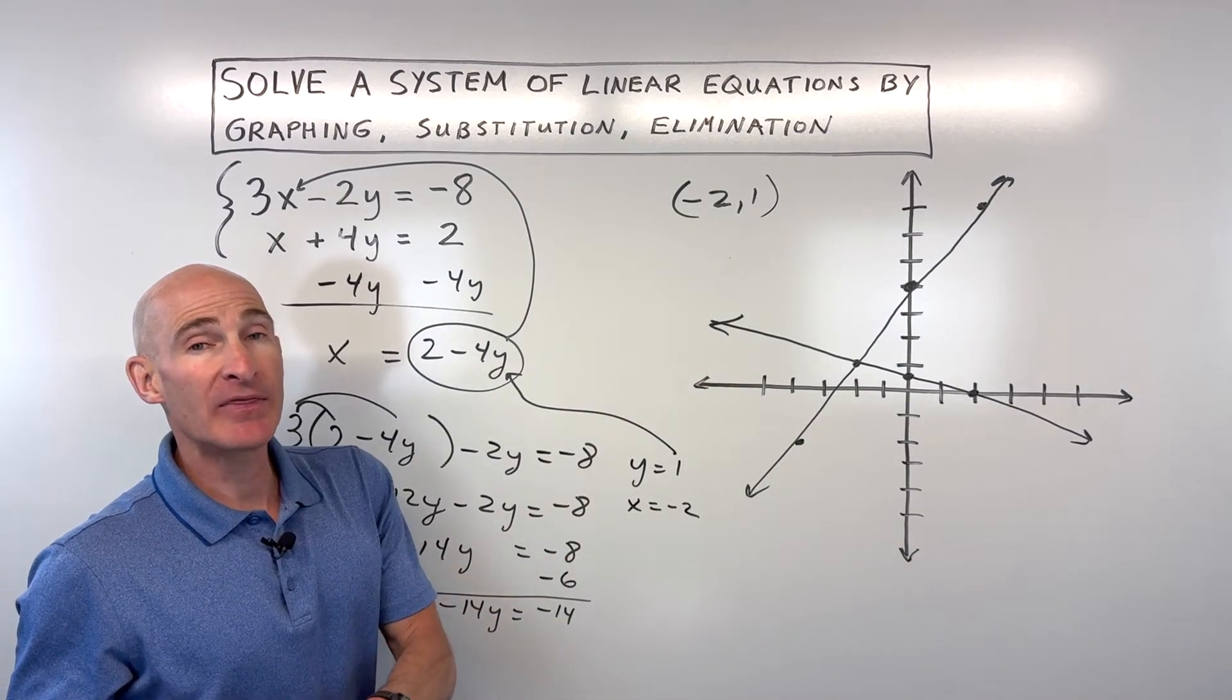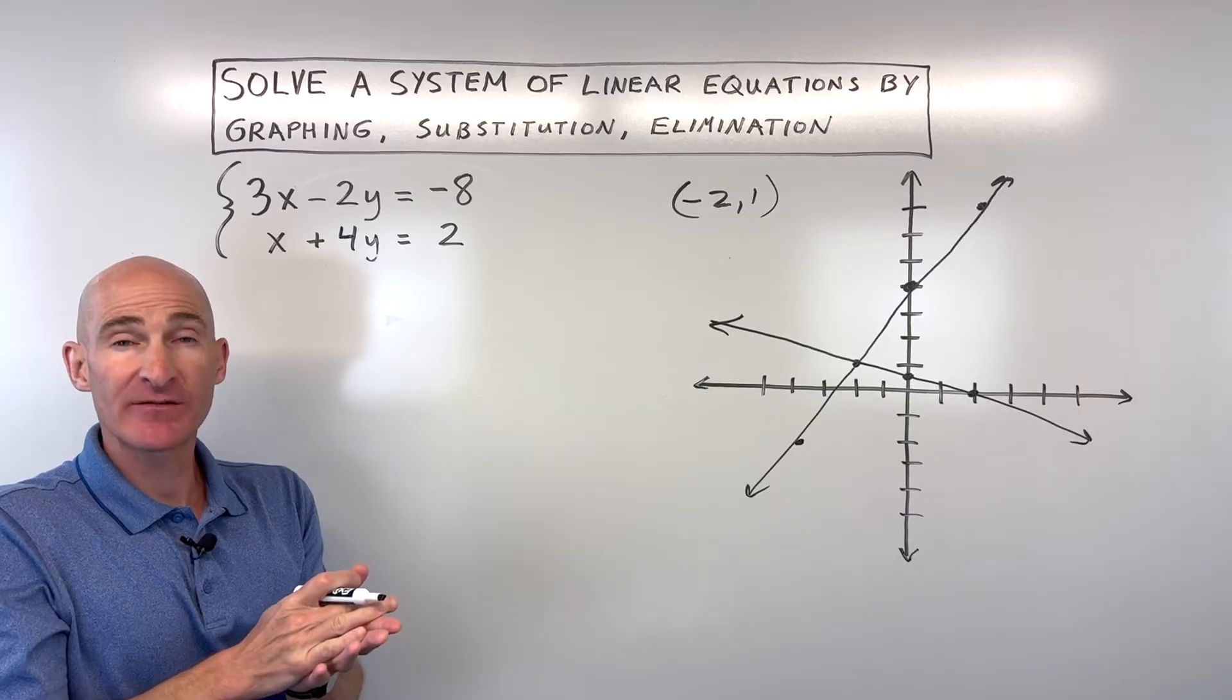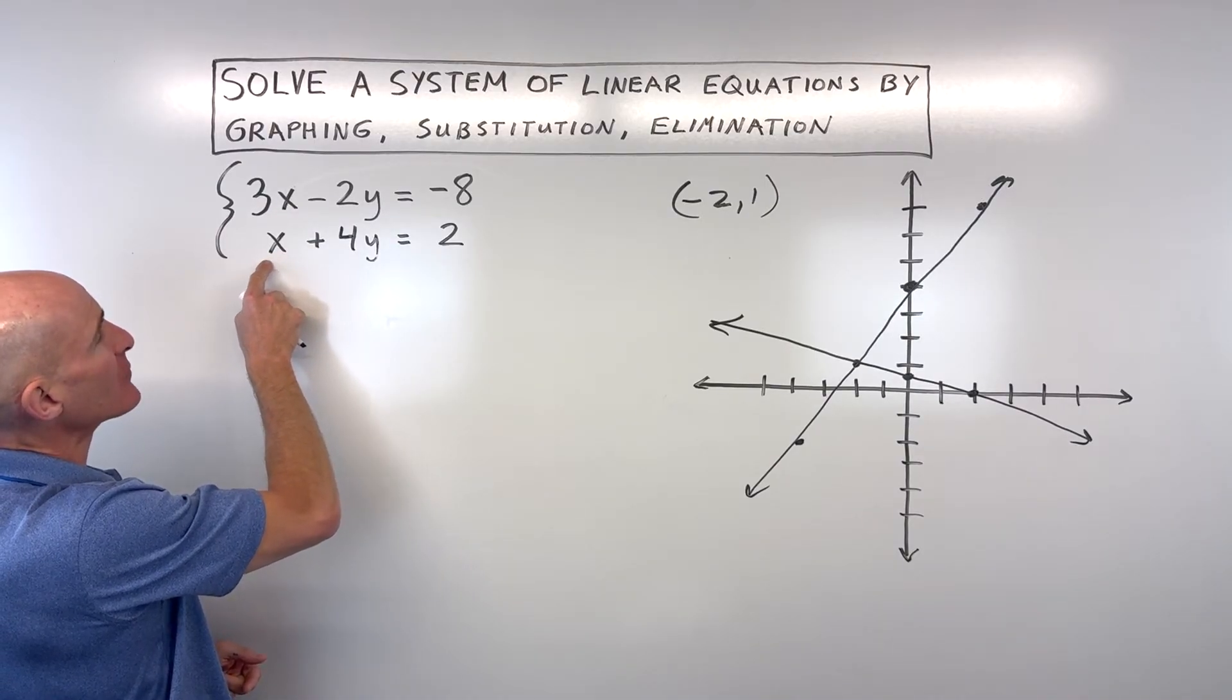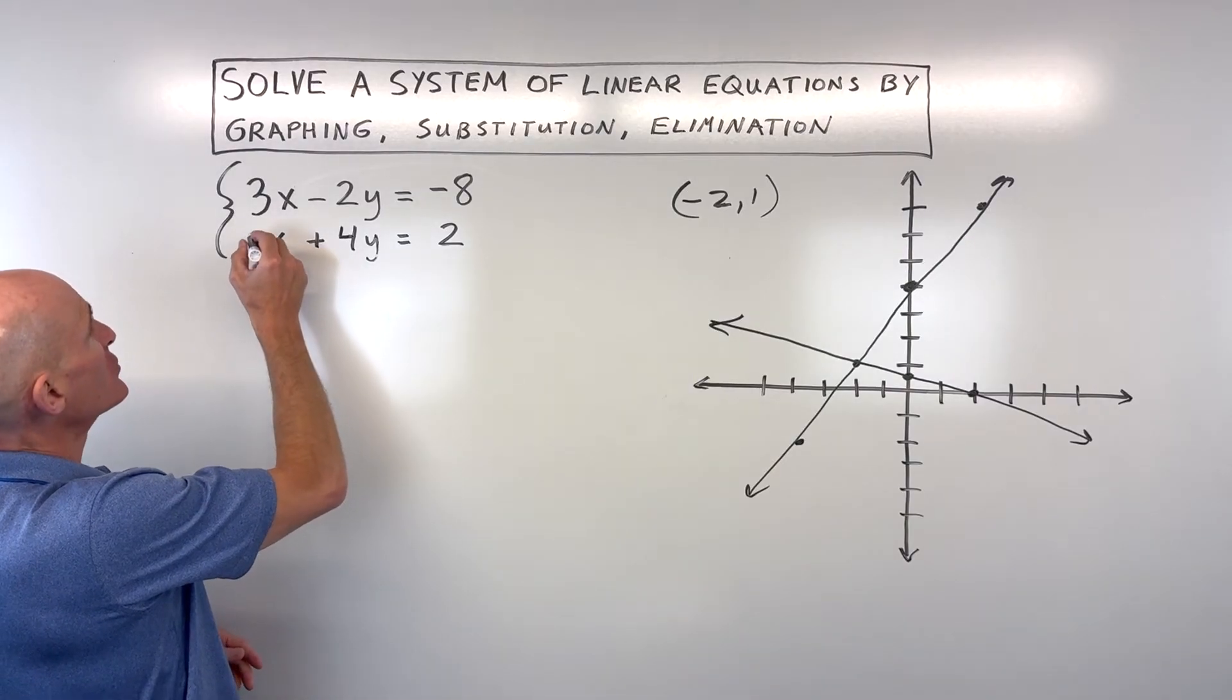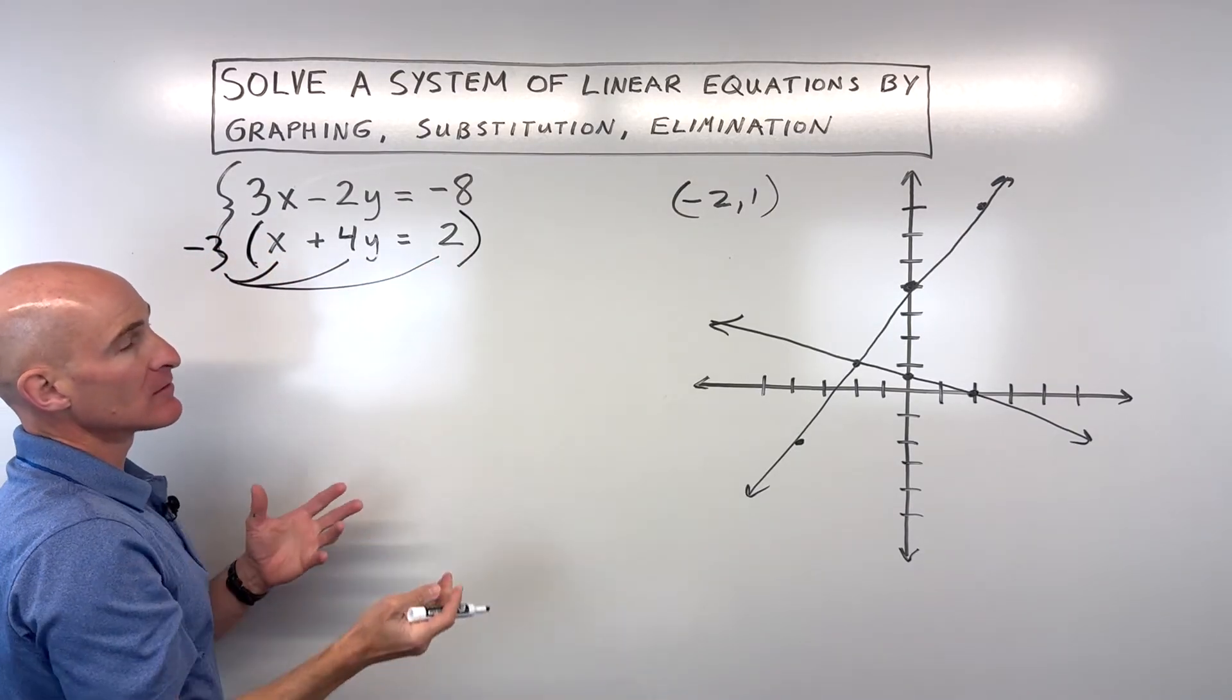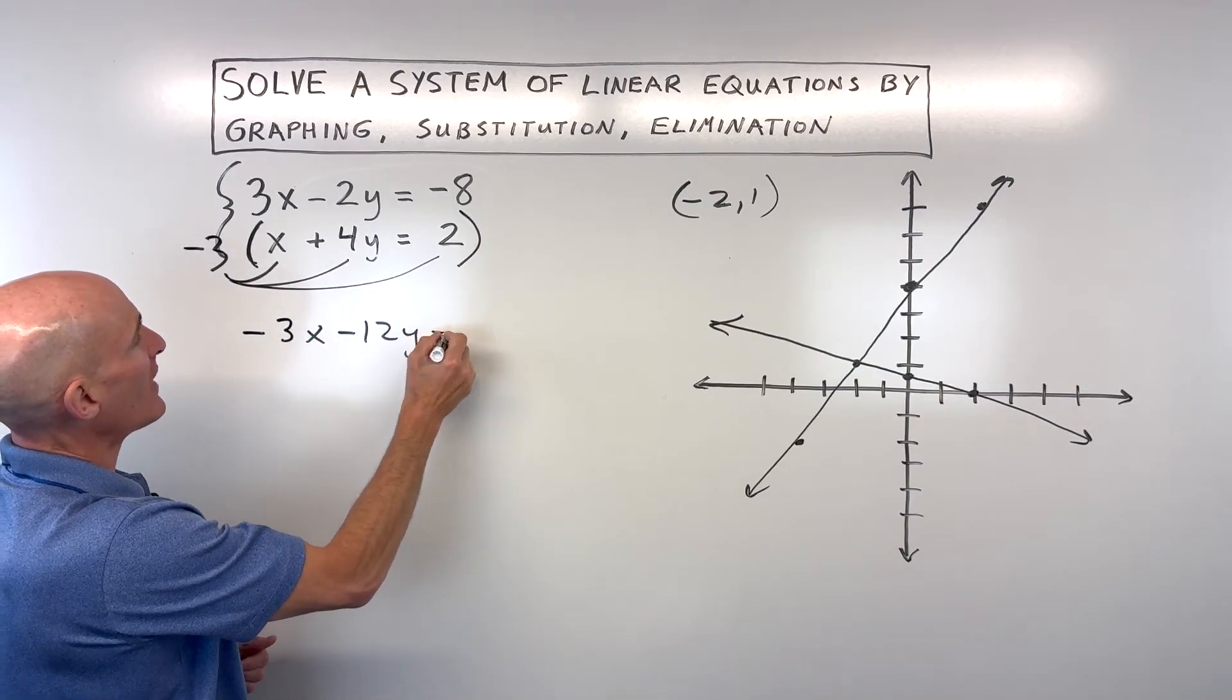Let's take a look now at the elimination way of solving this system. With the elimination method, what we want to do is we want to be able to add these two equations together to either eliminate the x variable or the y variable. And so, in this case, what I'm going to do is, see how this is 3x? I want this to be negative 3x. So, when I add these together, the x's cancel out. So, in order to do that, I'm going to multiply this whole equation here, this bottom equation, by negative 3. So, if I distribute that negative 3, left and right sides, everything's getting multiplied by negative 3. It's the same equation. Negative 3x minus 12y equals negative 6.